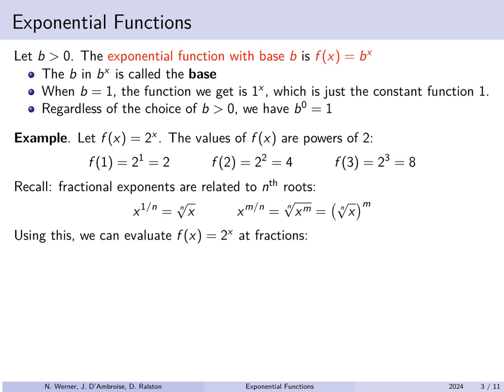Using this knowledge, we can evaluate f of x equals 2 to the x at fractional values of x. For example, f of 1.5 would be 2 to the 1.5 power — that's the square root of 2. Incidentally, this is why b shouldn't be allowed to be negative: if b was negative, f of 1.5 would be the square root of b, which won't be a real number. So when b is negative we have problems with fractional exponents, and therefore b is restricted to be a positive number.